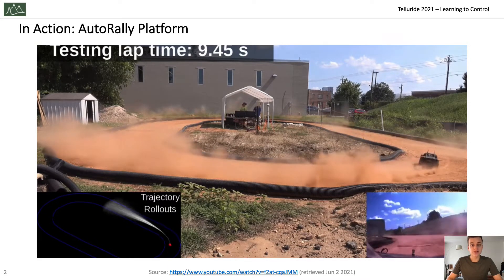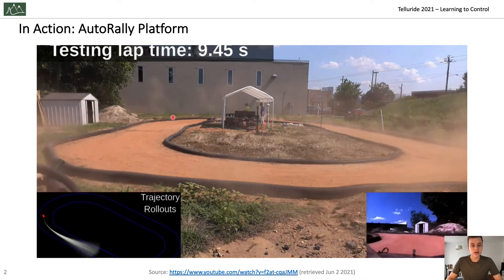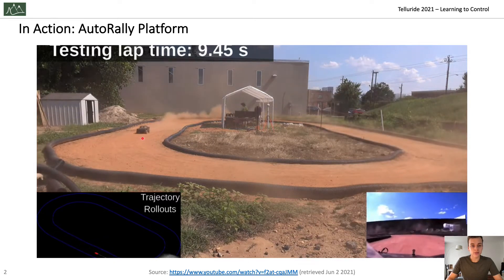In this video you can see it in action. You have a race car racing around a sand track. The race car is the so-called auto-rally platform.